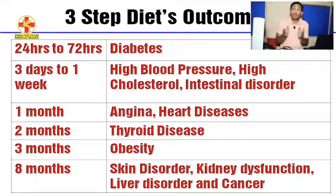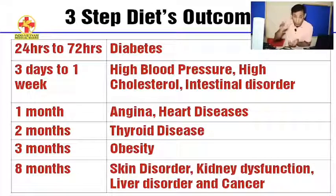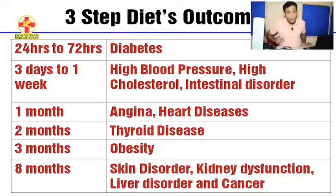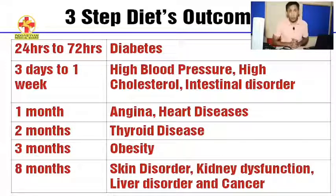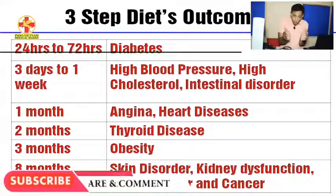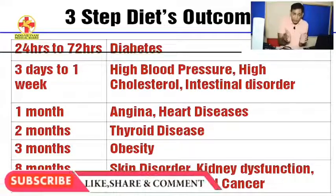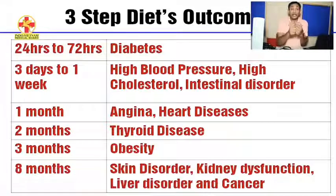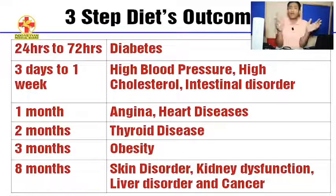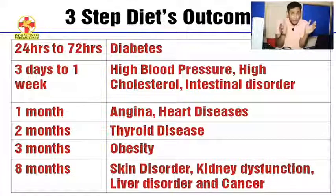Within two months your thyroid will become normal — meaning your thyroid medication, you will have to taper down or leave it. Hypothyroid or hyperthyroid, both are addressed. Within the first three months your body weight will come to a normal rate — normal BMI, in a healthy weight category. All of this will happen within the first three months of following this diet in these three steps.